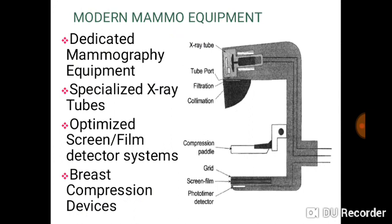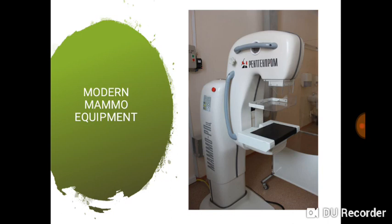A diagrammatic representation of a typical mammography equipment shows a dedicated unit using specialized X-ray tubes and an optimized screen-film detector system. There are breast compression devices used. The image shows the platform where the breast is positioned, the compression panel, and the X-ray tube collimator.